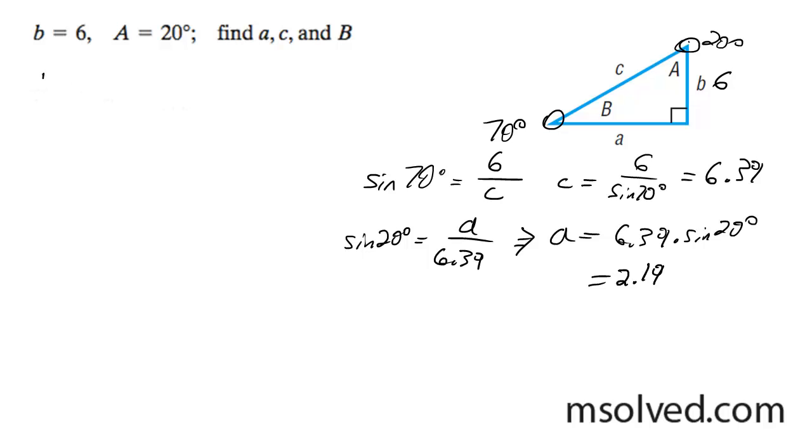So in summary, for angle B, we had 70 degrees. Side A, we had 2.19. And finally, side C, we had 6.39. That's it.